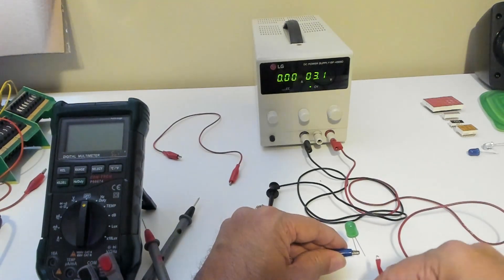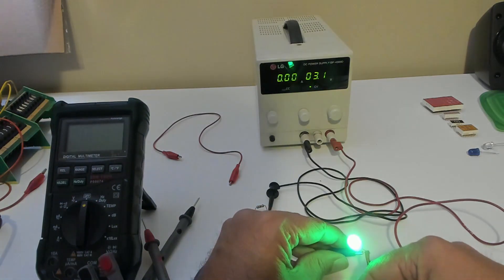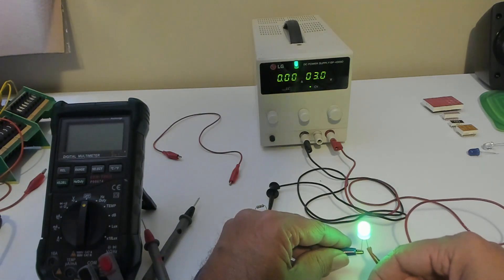Flipping it around so that now the cathode is to the negative and the anode is to the positive. You can see the light works properly.